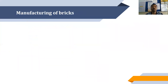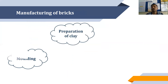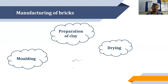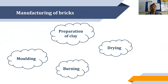The next topic is the manufacturing of bricks — how bricks are manufactured and what processes are involved. There are four steps in the preparation or manufacturing of bricks: the first is preparation of clay, second is molding, third is drying, and the last is burning.